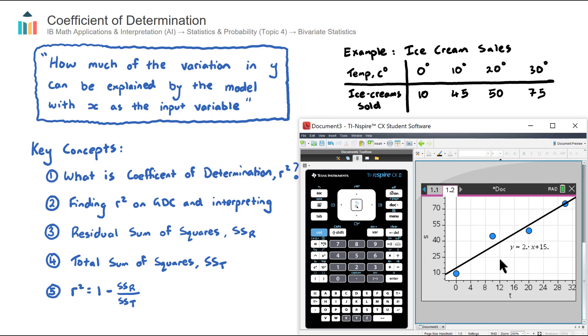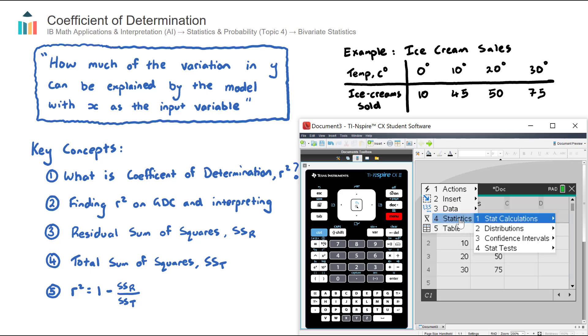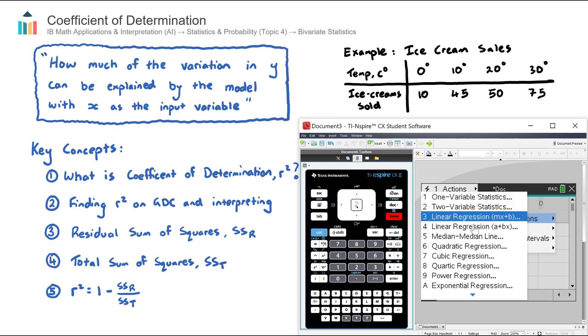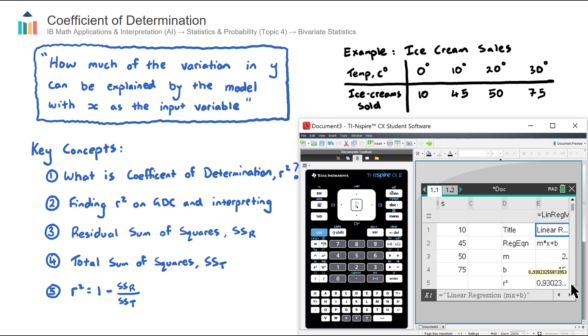We can't see the R squared value on this screen, so we need to go back to the spreadsheet. Let's go here. Let's go to the top of column C, and let's perform another linear regression stat calculation. We go menu, number four, statistics, number one, stat calculations, and we'll choose number three, linear regression MX plus B. Our X1 list is T for temp. Our Y1 list is S for sales.